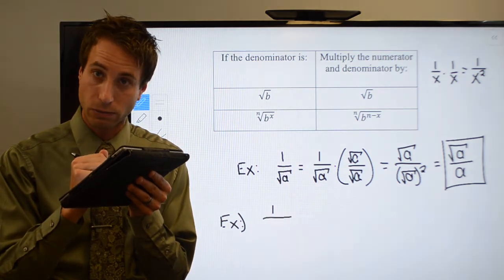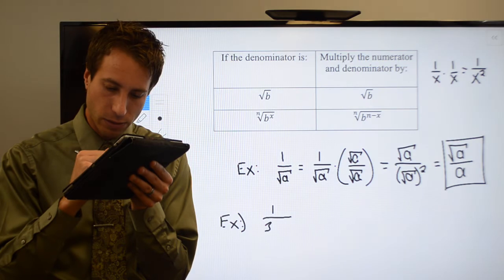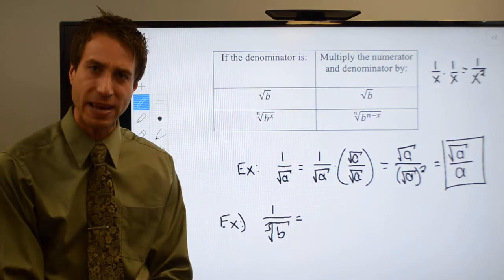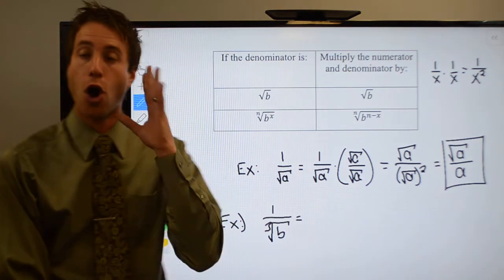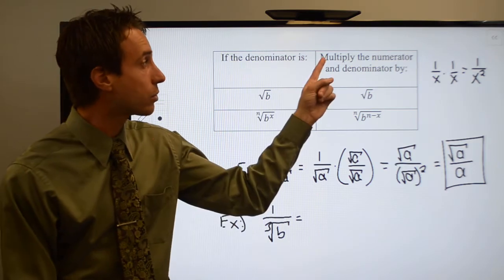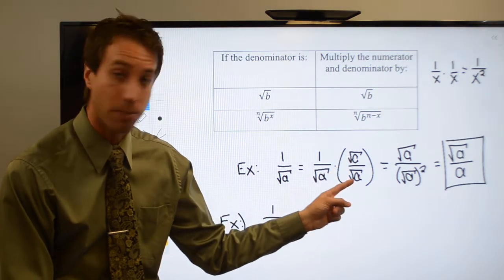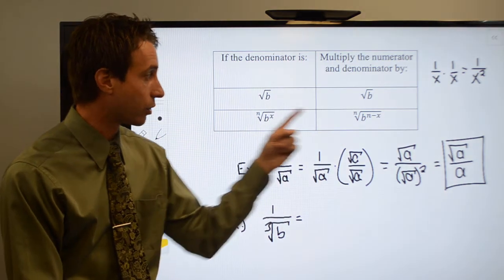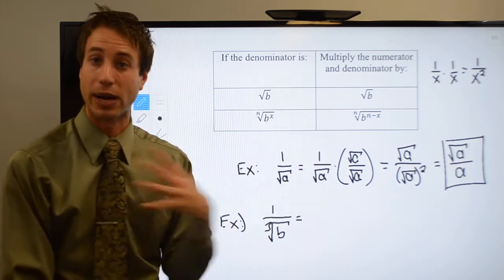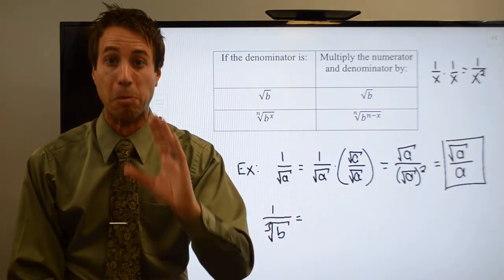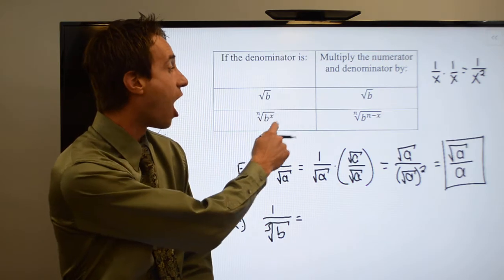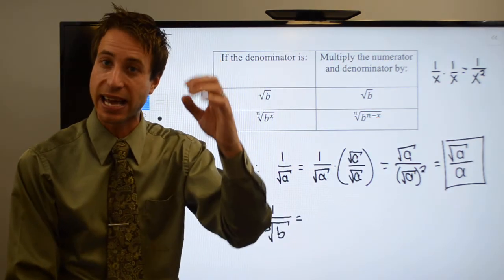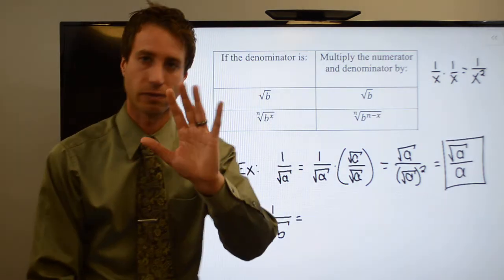If I have 1 over the cubed root of b, I look at the problem and I see my index is a 3. What you're going to do is multiply the numerator and denominator by the exact same radical — the same degree radical. But the radicand, what's underneath the radical, I'm going to raise it to the n minus x power, where n is the index and x is the original power.